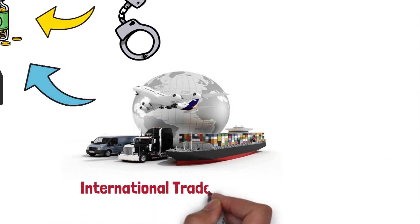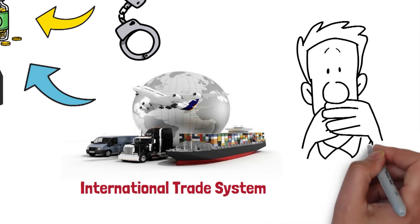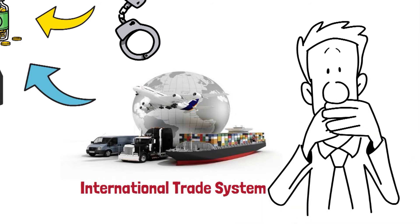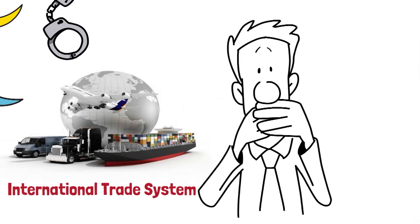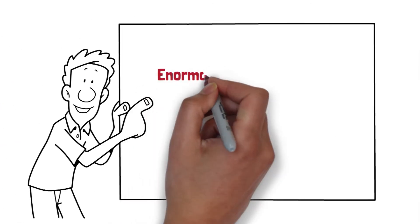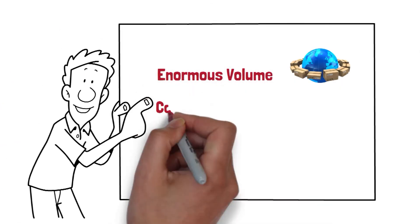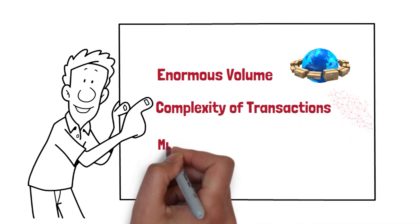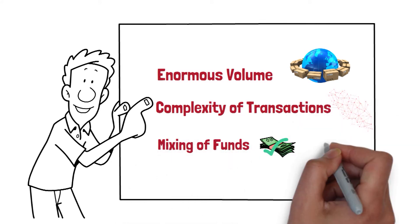In fact, the international trade system is subject to a wide range of vulnerabilities that can be used by money launderers. In part, this is due to the enormous volume of trade flow, the complexities of foreign exchange transactions, and the mixing of legal and illegal funds.